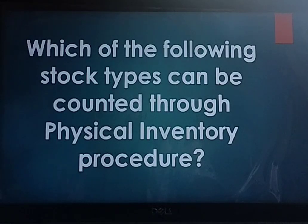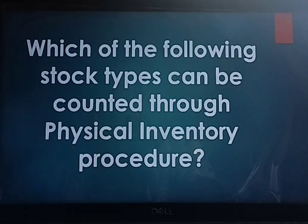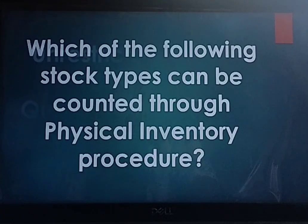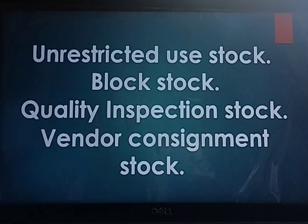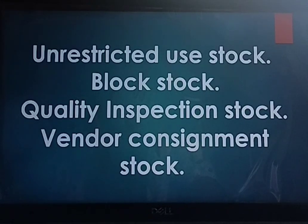Which stock types can be counted through the physical inventory procedure? Physical inventory can be done with T-code MI01 to create the physical inventory document. The stocks to be counted for physical inventory are: unrestricted use stock, blocked stock, quality inspection stock, and vendor consignment stock. These are the four stock types considered for the physical inventory procedure.